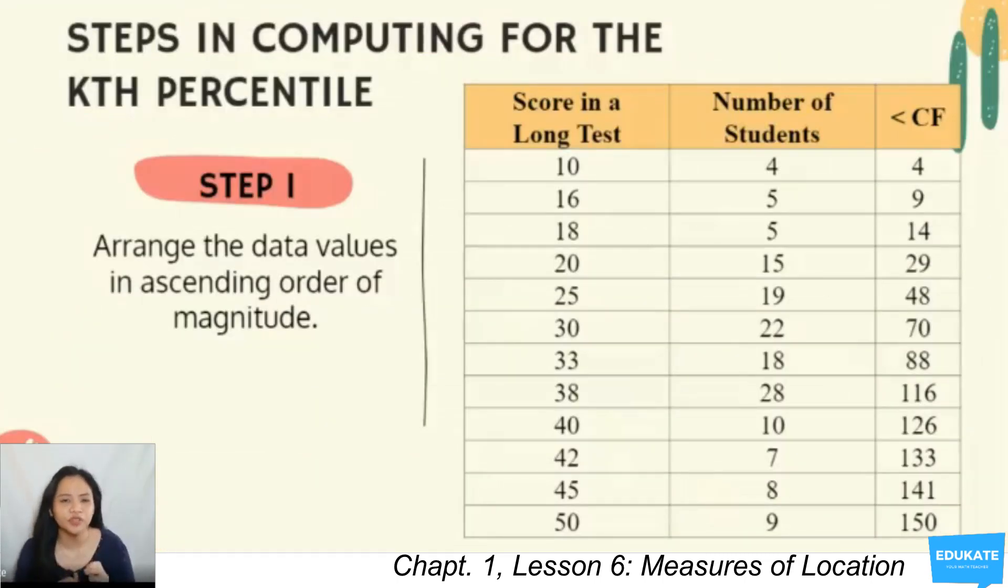This is the first step in computing for the Kth percentile. You arrange your data values in ascending order of magnitude. You can see here your scores in a long test are arranged from ascending order. You have 10, 16, 18, up to 50.